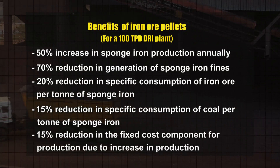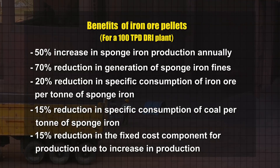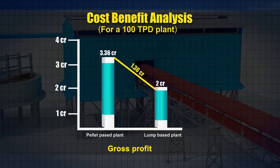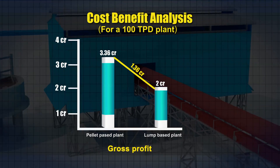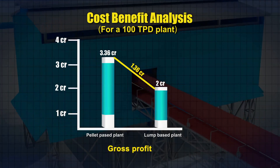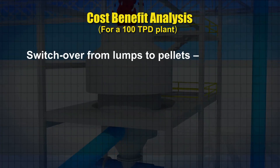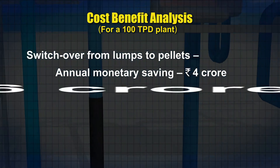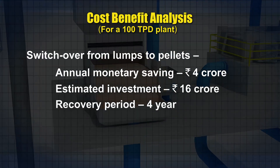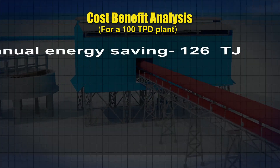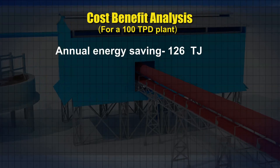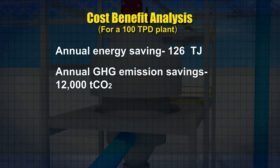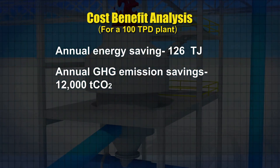There is a 15% reduction in the fixed cost component for production due to increase in production. The gross profit envisaged for a 100 TPD plant works out to be 3.36 crore rupees annually for a pellet-based plant, compared to about 2 crores for a lump-based plant. Thus, switchover from lumps to pellets can lead to an additional annual monetary saving of 4 crore rupees, and an estimated investment of 16 crore rupees can be recovered within 4 years. This switchover from lumps to pellets can save 126 terajoules of energy annually, leading to GHG emission saving of around 12,000 tonnes of carbon dioxide per year for a 100 TPD plant.